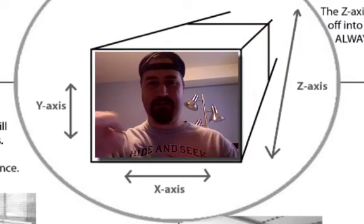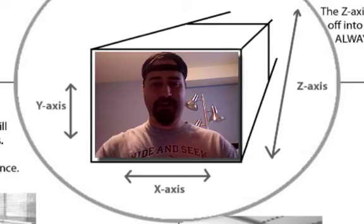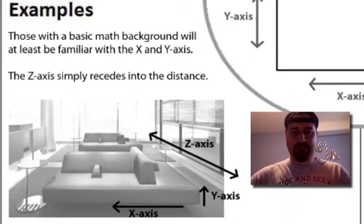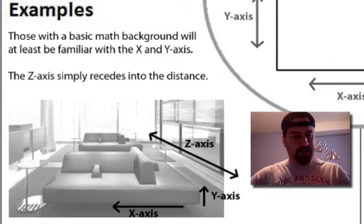X axis is flat. Y is straight up and down. Z is everything that goes off into the distance. So let's look at some examples here. We'll be pretty brief. It's not too heavy.